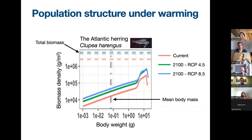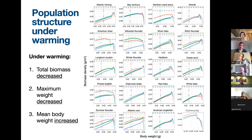For each species, we have something like size spectra curves. We also plot two additional pieces of information on this graph: the biomass, shown as horizontal lines, and the mean body size, shown as vertical lines, with different climate scenarios colored differently. This is the result for all species — it's quite a busy plot — but I want to focus on three general trends we found. Under warming, for most species: total biomass decreased, maximum weight also decreased, but mean body weight increased. We see these shifts in size spectra in general from all the species considered.